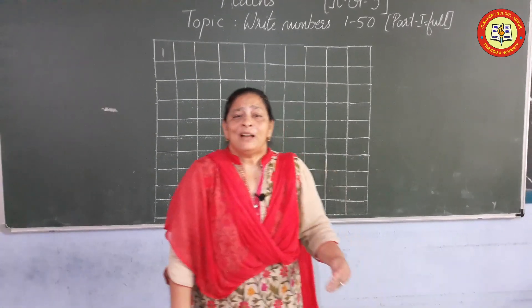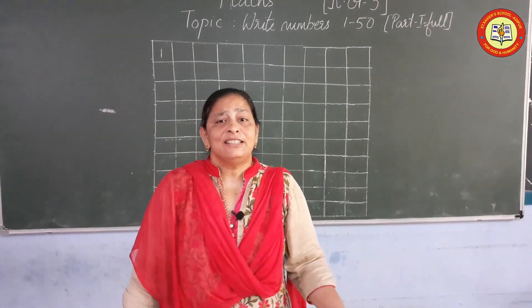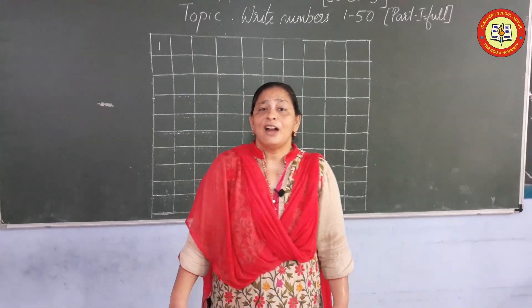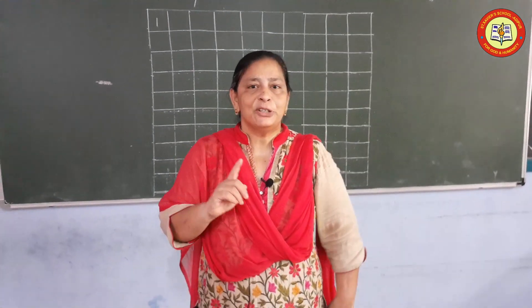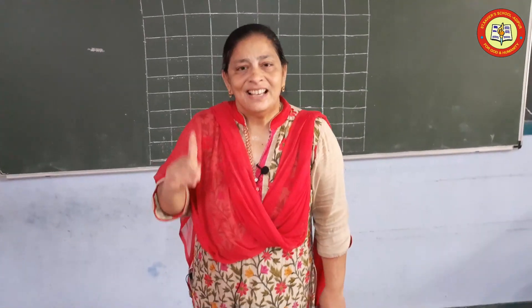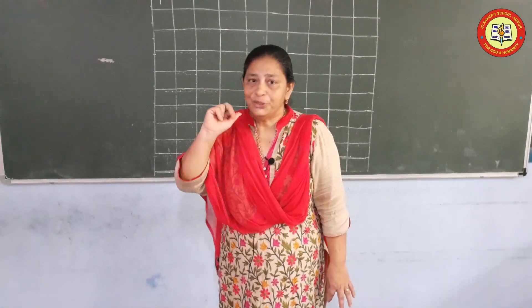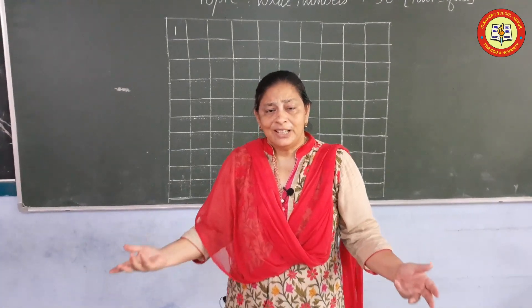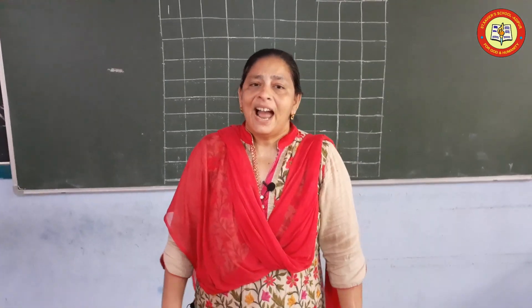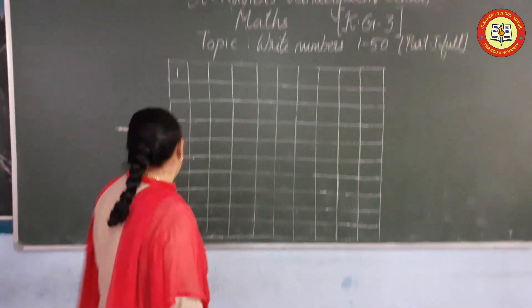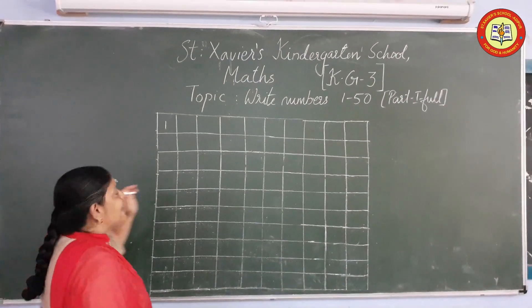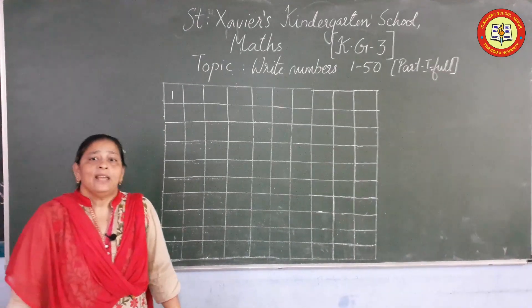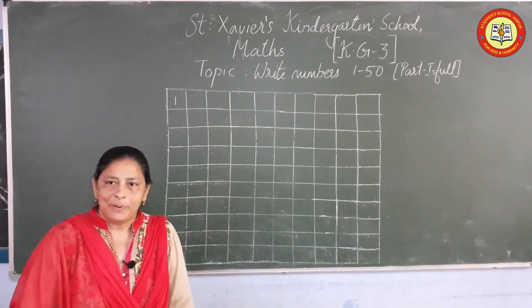Now students, today we are going to write numbers 1 to 50. You all know it — we have already done numbers 1 to 50 in KG 2. Still we are revising. Now students, take out your notebook and look at the board. I am going to write numbers 1 to 50 on the board and students, copy it properly.